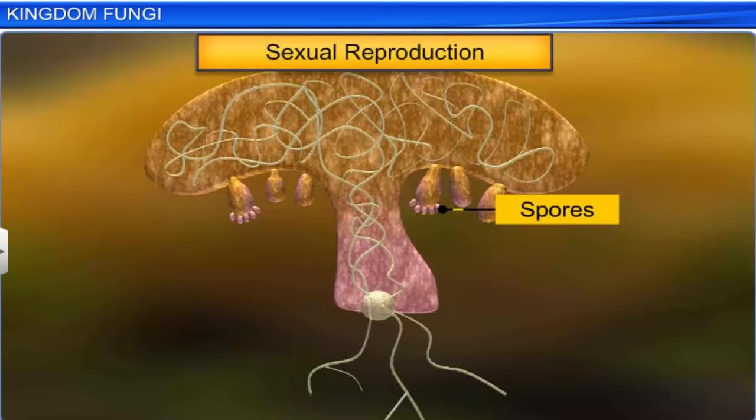In some fungi, the fusion of two haploid cells immediately results in the formation of diploid cells, or 2N. In other fungi, like Ascomycetes and Basidiomycetes, an intervening dicaryotic stage occurs. This condition of two nuclei per cell is called dicaryon. Later, the parental nuclei fuse to make a diploid cell.